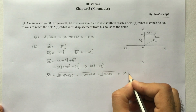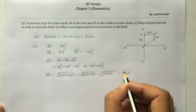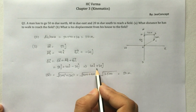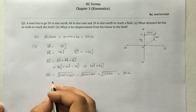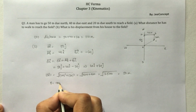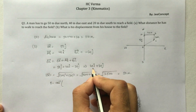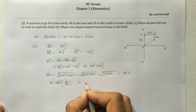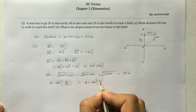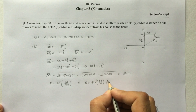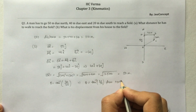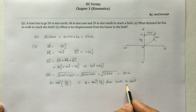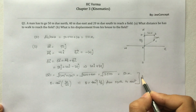Since displacement is a vector, we also need the direction. For a vector in i and j format, the direction is given by θ = tan⁻¹(y-component / x-component) = tan⁻¹(30/40) = tan⁻¹(3/4). So the direction is tan⁻¹(3/4) from north towards east. This completes the solution to the problem.